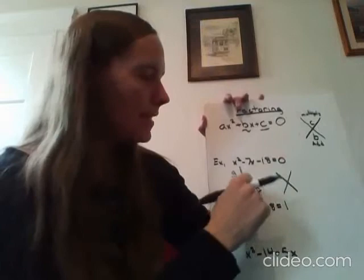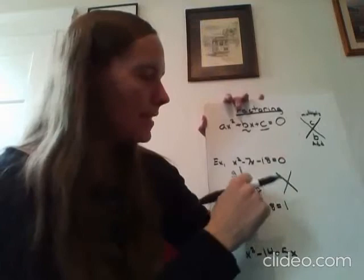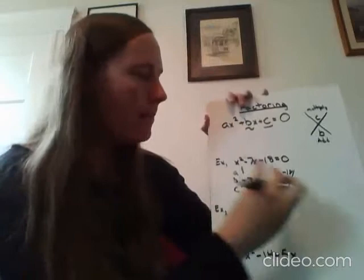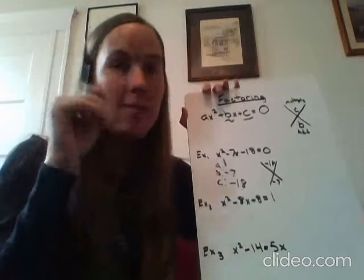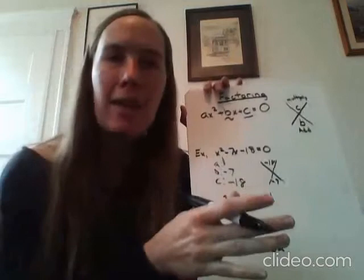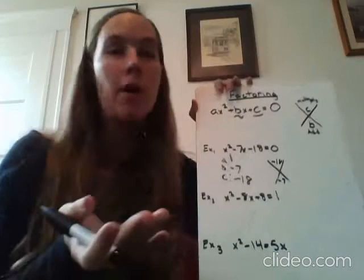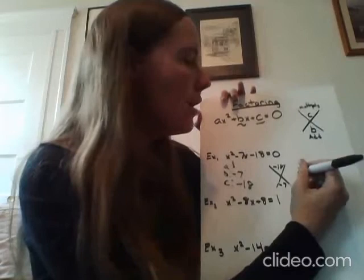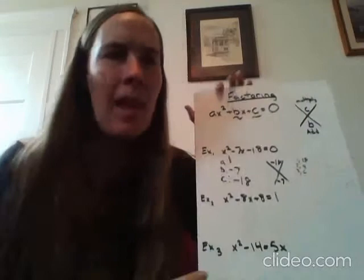Now I can make my x factor. On my top is my c value, which is negative 18. And on my bottom is my b value, which is negative 7. I also haven't done these yet, so you're going to see me processing in real time. I'm looking for two numbers that multiply to negative 18, and add or subtract to negative 7. I like to think, what are the factors of 18? I know 1 and 18, 2 and 9, 3 and 6.